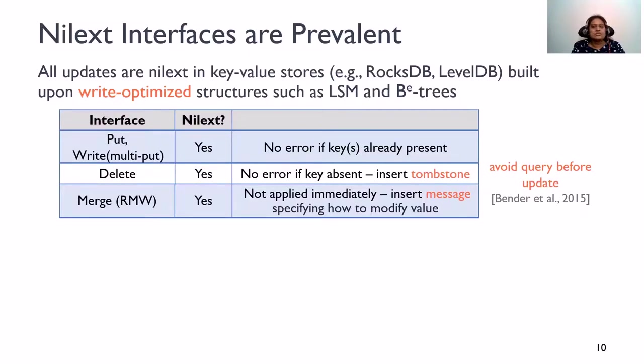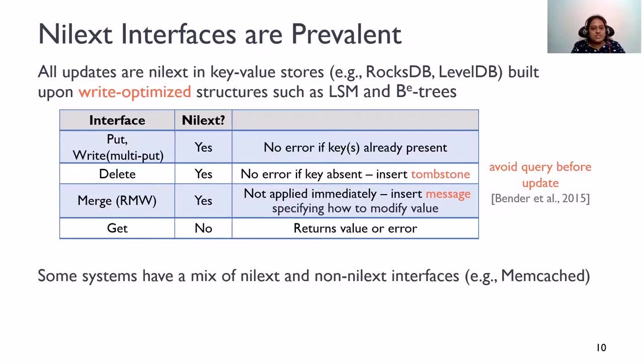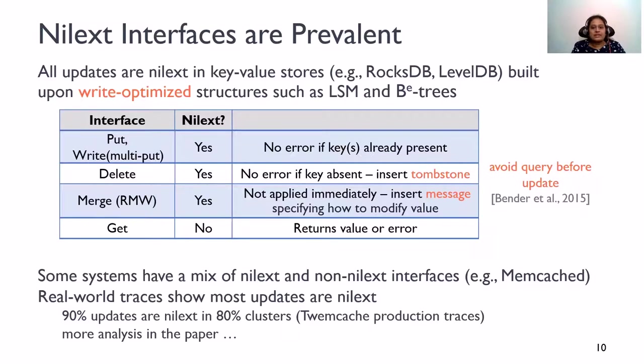This is because these stores are designed to avoid queries before updates. Of course, get or exists apis are not nilext. However, some systems have a mix of nilext and non-nilext interfaces. But production traces reveal that a vast majority of updates issued by applications are nilext. Please see our paper for the analysis.